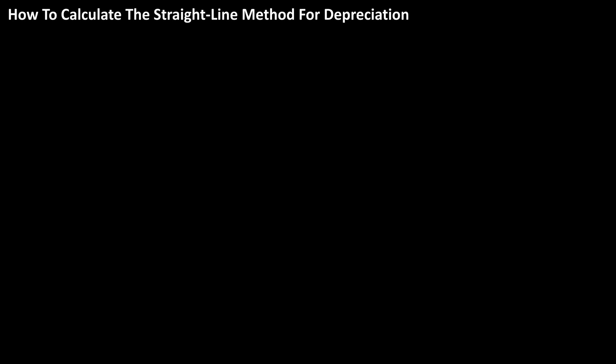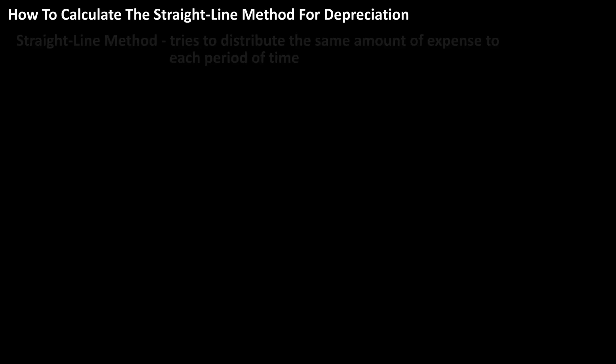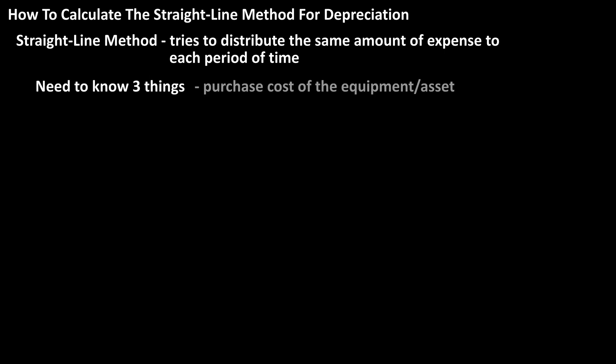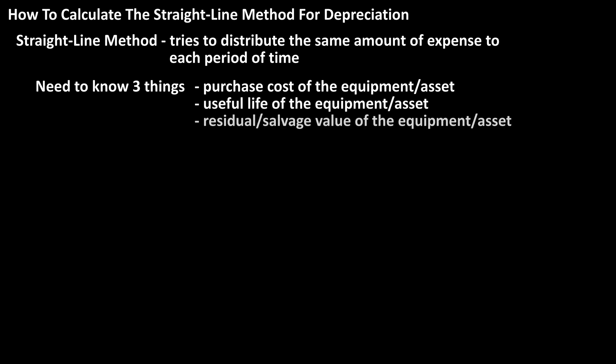The straight-line method for depreciation tries to distribute the same amount of expense to each period of time. To do this, we must know three things: the purchase cost of the equipment or asset, the useful life of the equipment or asset, and the residual or salvage value of the asset.